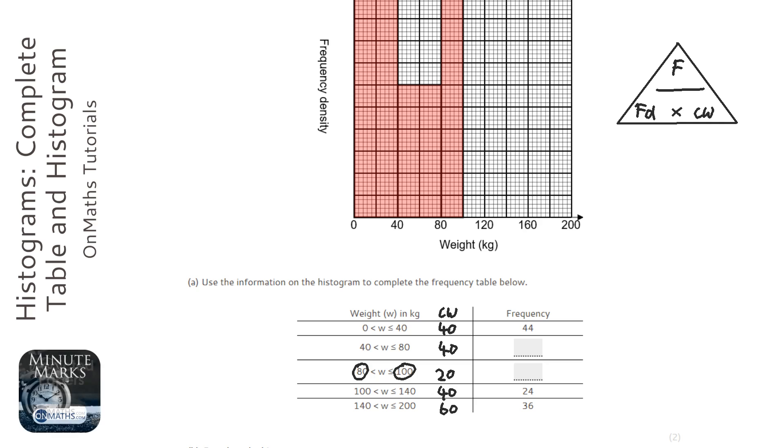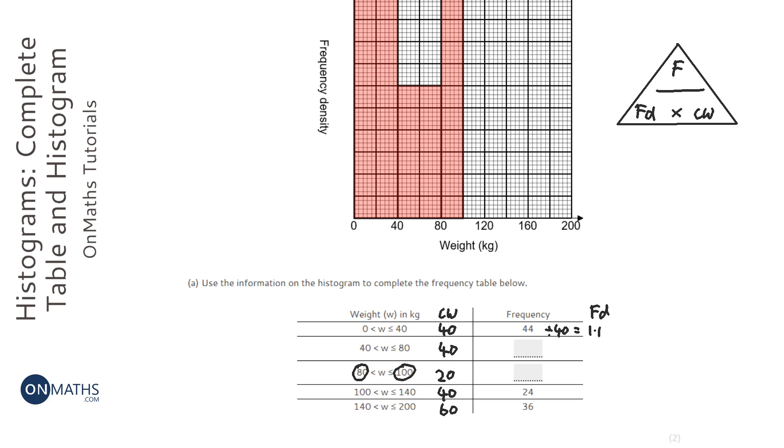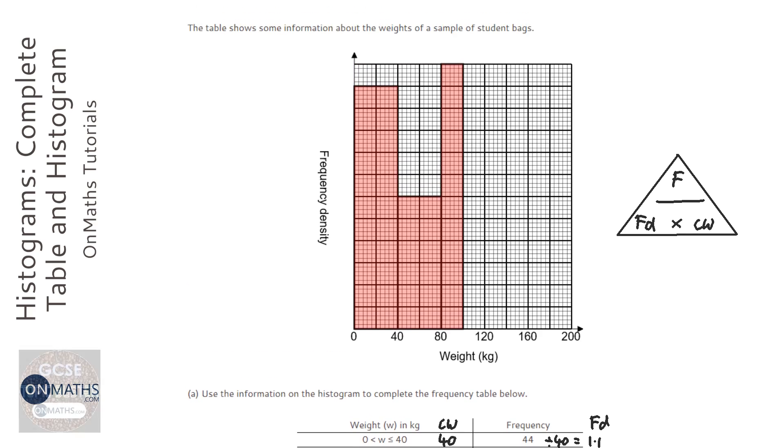Okay, now I know that I do the frequency divided by the class width to work out the frequency density. So I'm going to do 44 divided by 40, divide that by the class width, which gives me 1.1. Now if I go to my diagram and label that as 1.1, because frequency density is on that axis, on the y-axis, then if I look down,